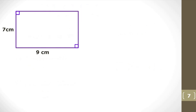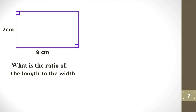Here is a rectangle. What is the ratio of the length to the width? The length is 9 and the width is 7, so therefore the ratio of length to width is 9 to 7. It has to be in that order — length first, then width.